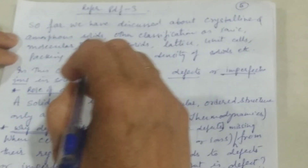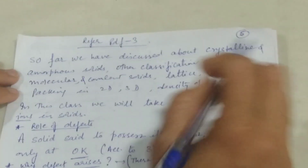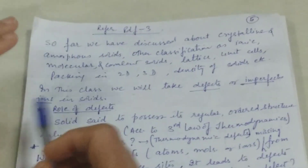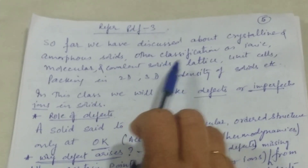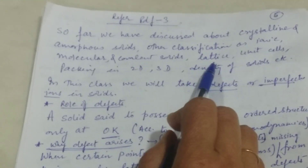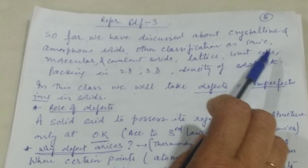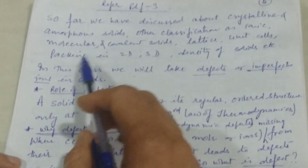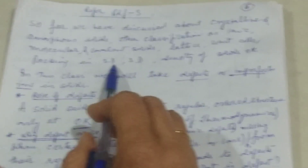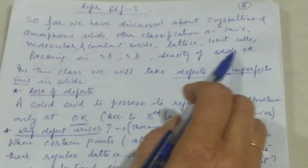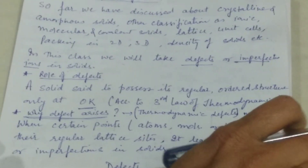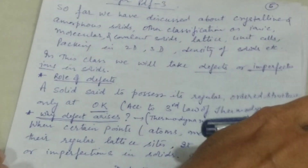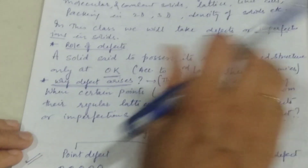So far we have discussed the different types of solids like crystalline, amorphous, ionic, molecular, covalent, etc., the lattice of the solids, the unit cells, its types, the number of atoms, packing in two dimensions and three dimensions, density of solids, etc. All these topics we have already discussed in the previous classes.